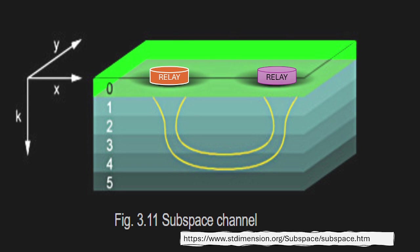Subspace communication might look like this: there might be a channel going over some subspace level. The subspace radio, whether it's in a relay or a starship, is able to open this channel and communicate over distances to either a relay or a far-distance endpoint. The signal going into this channel might need considerable amplification to overcome drag across these distances and passing over subspace. Also, the transmitter or device that opens this channel might need considerable energy to keep it open and transmit.